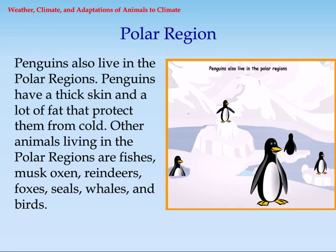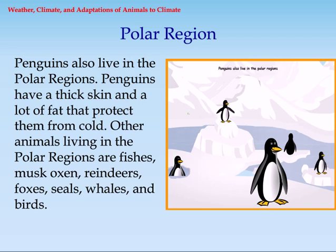Penguins also live in the polar regions. Penguins have thick skin and a lot of fat that protect them from cold. Other animals living in the polar regions are fishes, musk oxen, reindeer, foxes, seals, whales, and birds.